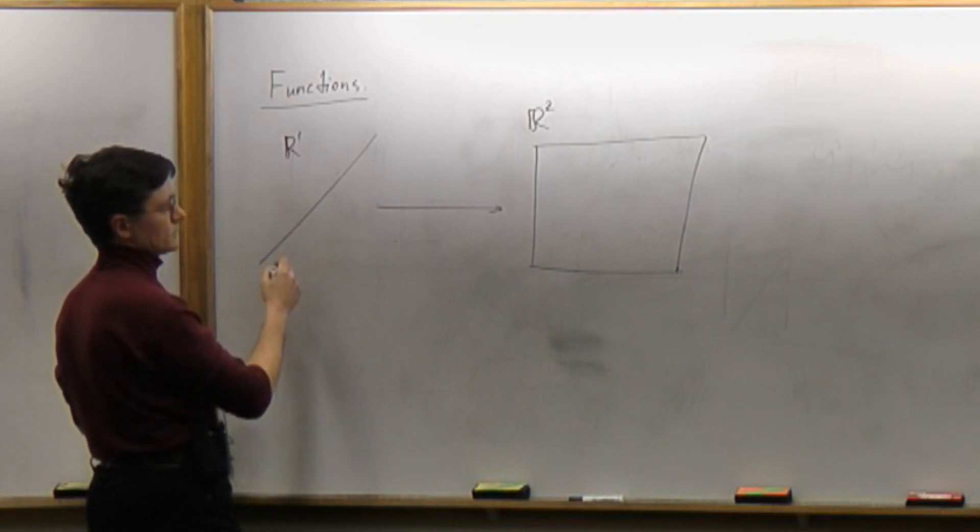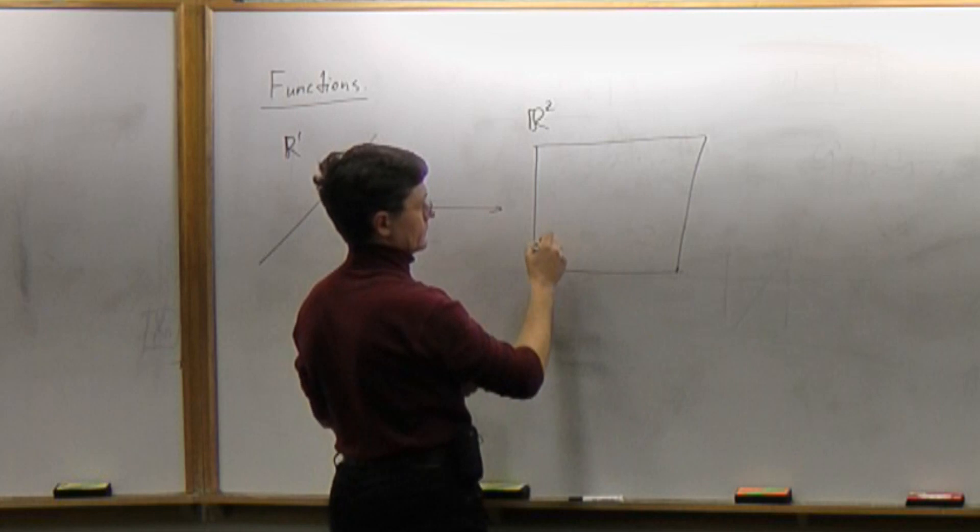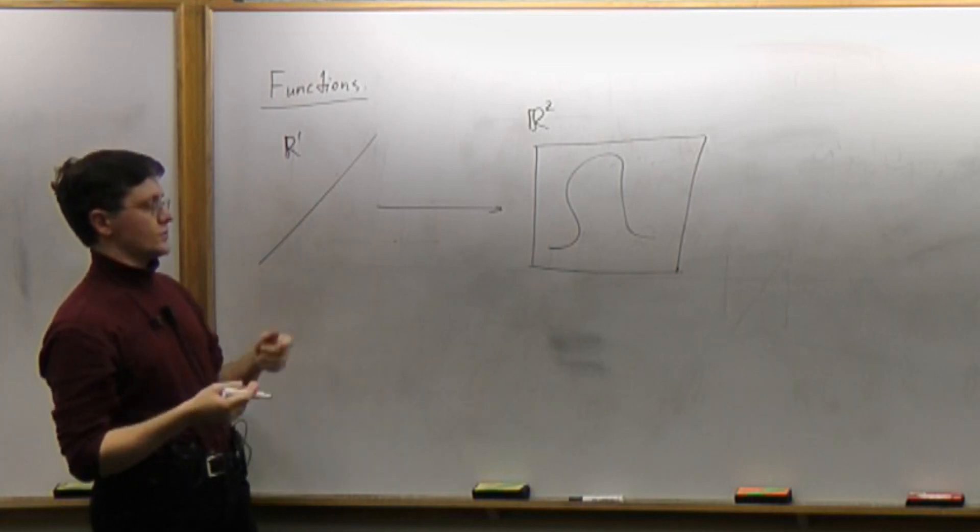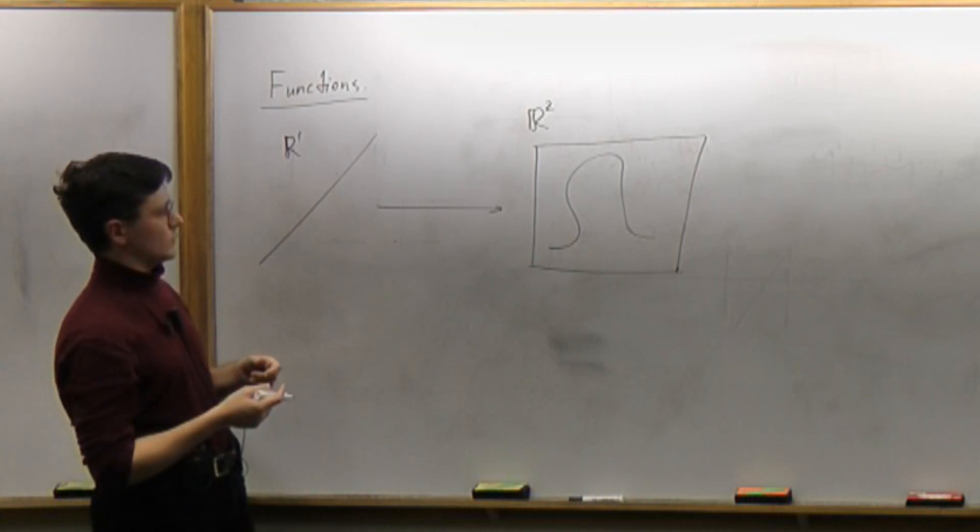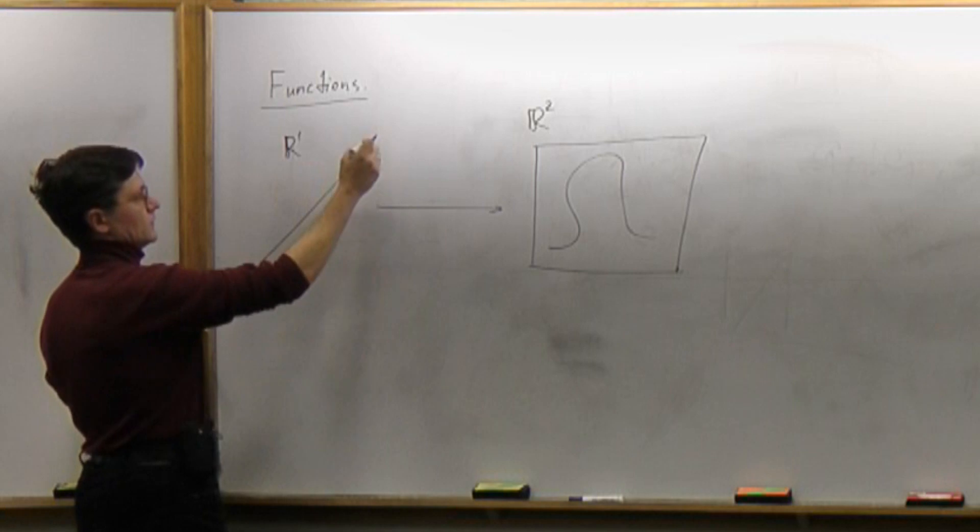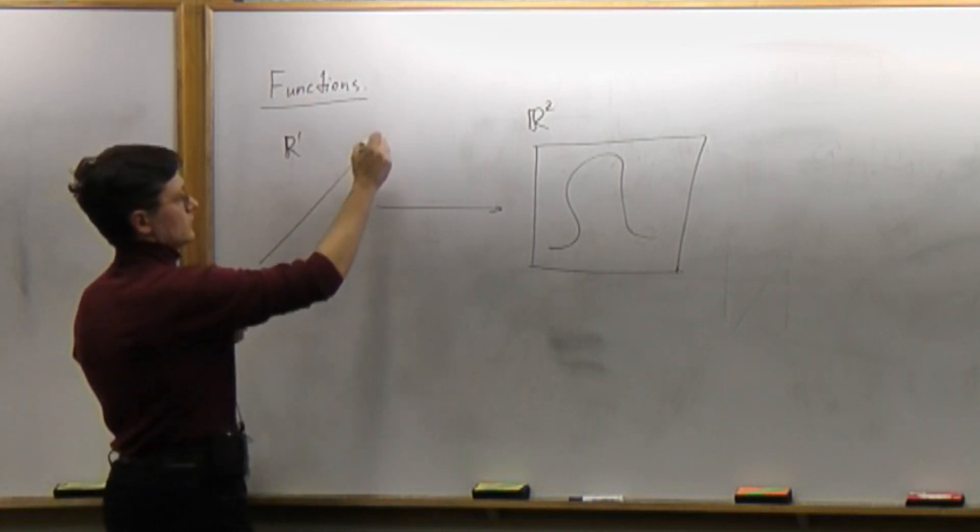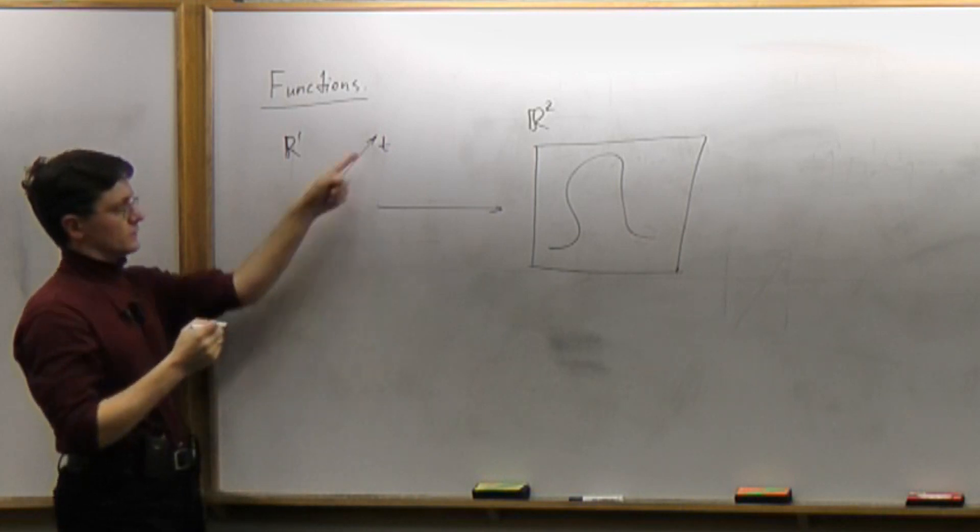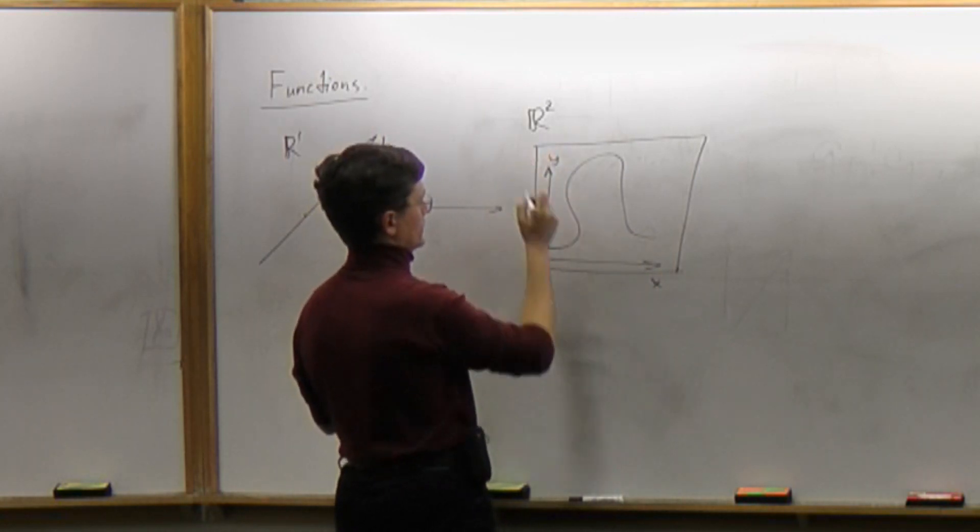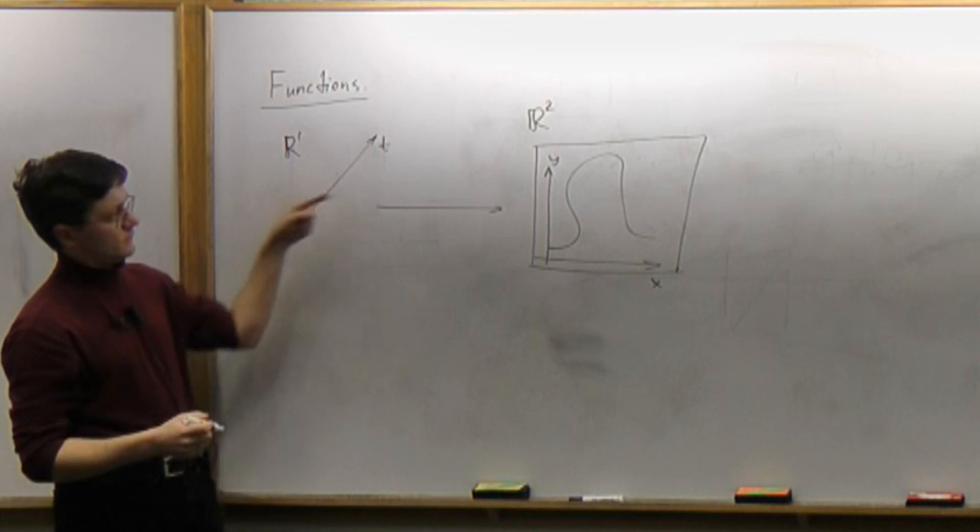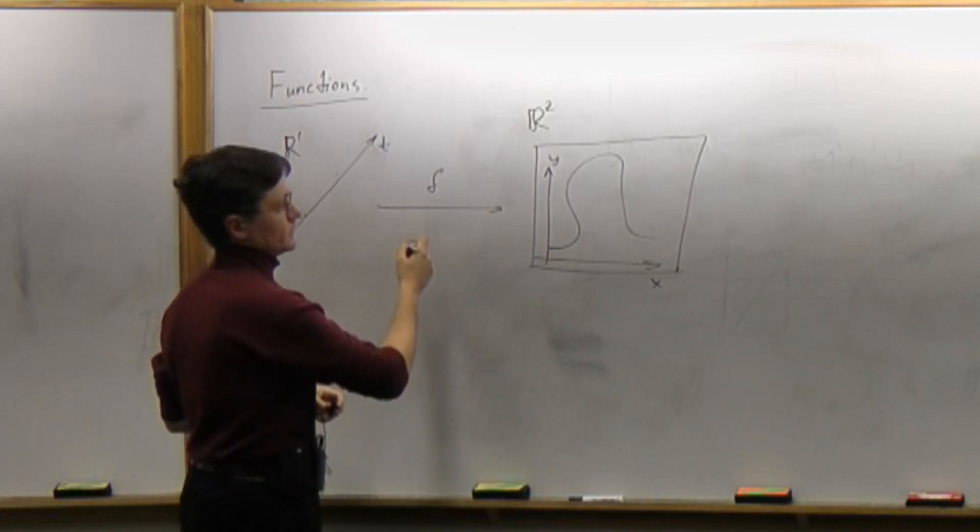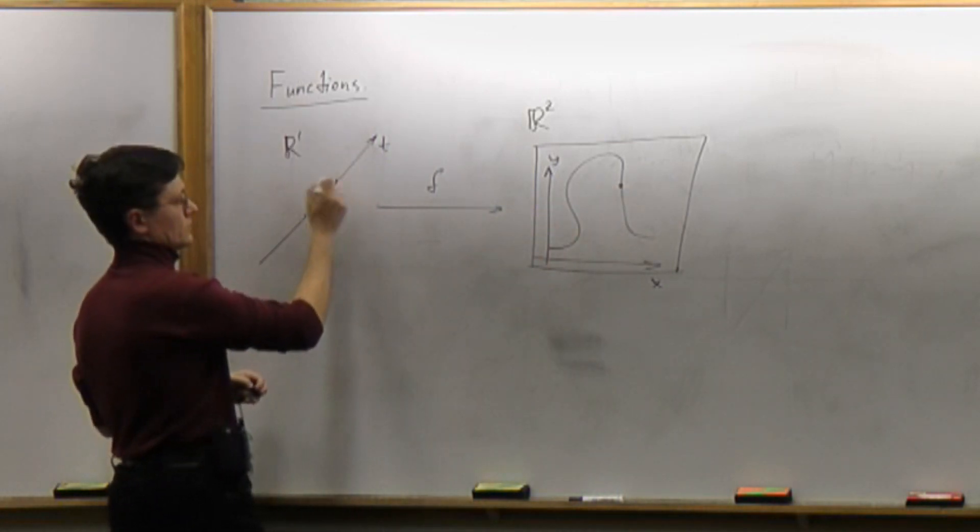Basically what that means is that you geometrically take this line and you put it on a plane somehow. So that's the geometric approach. The physics approach is not quite obvious, but the algebraic approach is going to be to give coordinate system to the line. So let's use coordinate T for the line, and let's use coordinates for the plane, let's say x and y. And then this function from that line to the plane is going to be simply an assignment of a point on the plane to every point on that line.